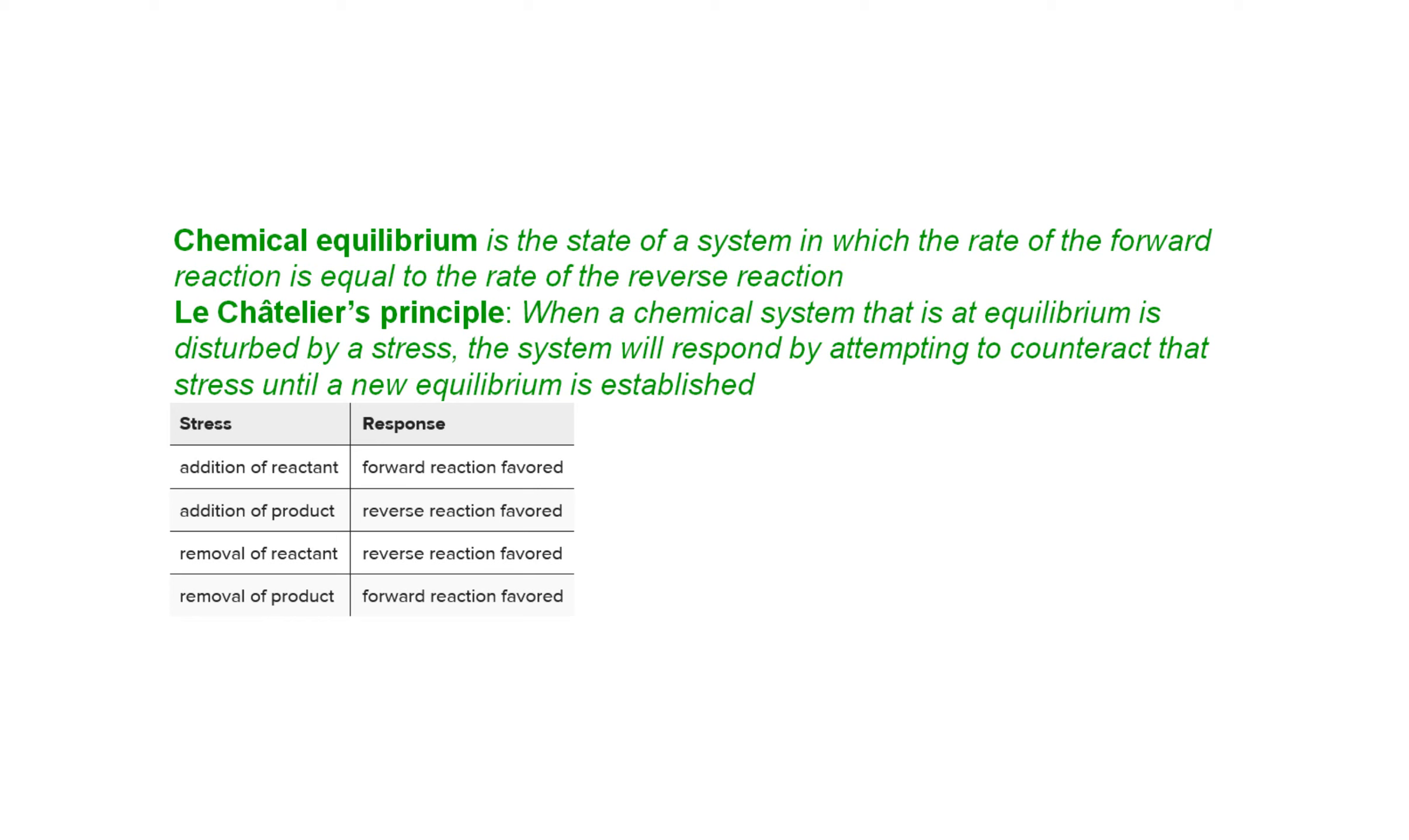So for example, if we have H2 plus O2 at equilibrium with H2O, and we add some reactant, let's say we add some extra hydrogen gas. Well, then it's going to shift and make more water, more H2O, in order to be at equilibrium again.